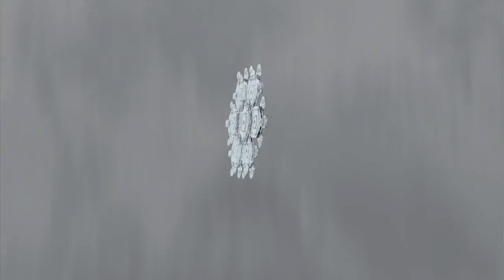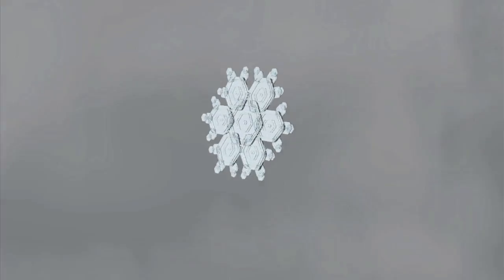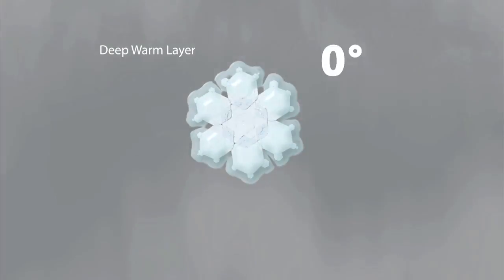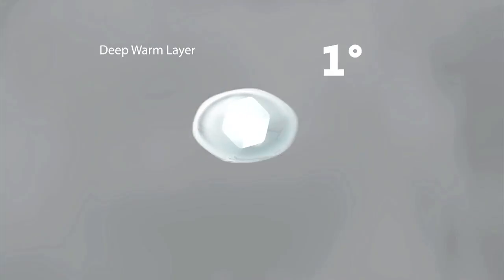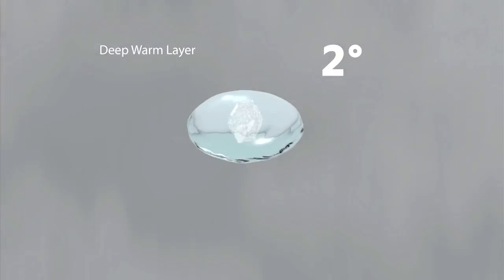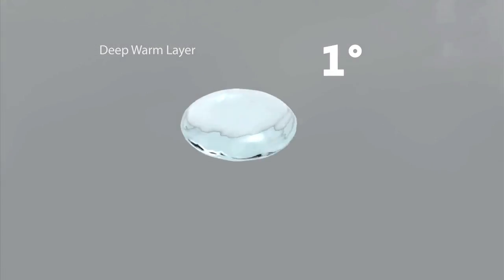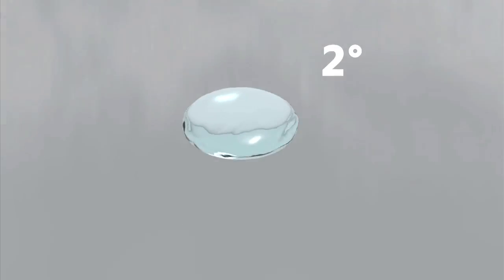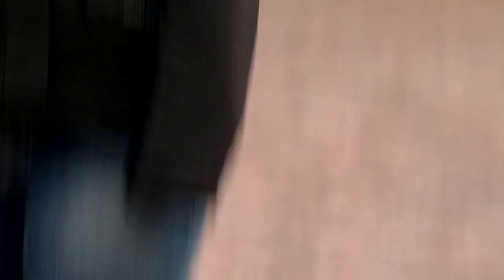Freezing rain works a bit differently. It does begin as a snowflake and falls through the atmosphere, however it enters a warm area that is much deeper, so that snowflake melts all the way down and becomes just a regular raindrop, continuing all the way down to the ground. But at the surface it's actually still below freezing, so that liquid water hits the ground and freezes right on contact.